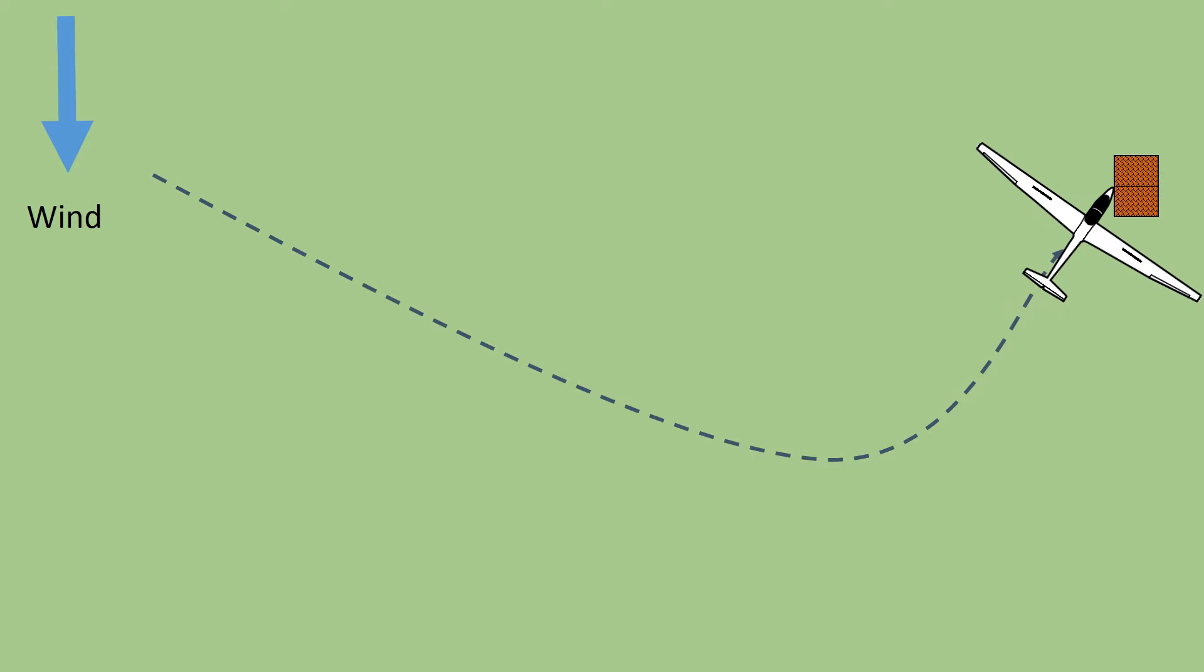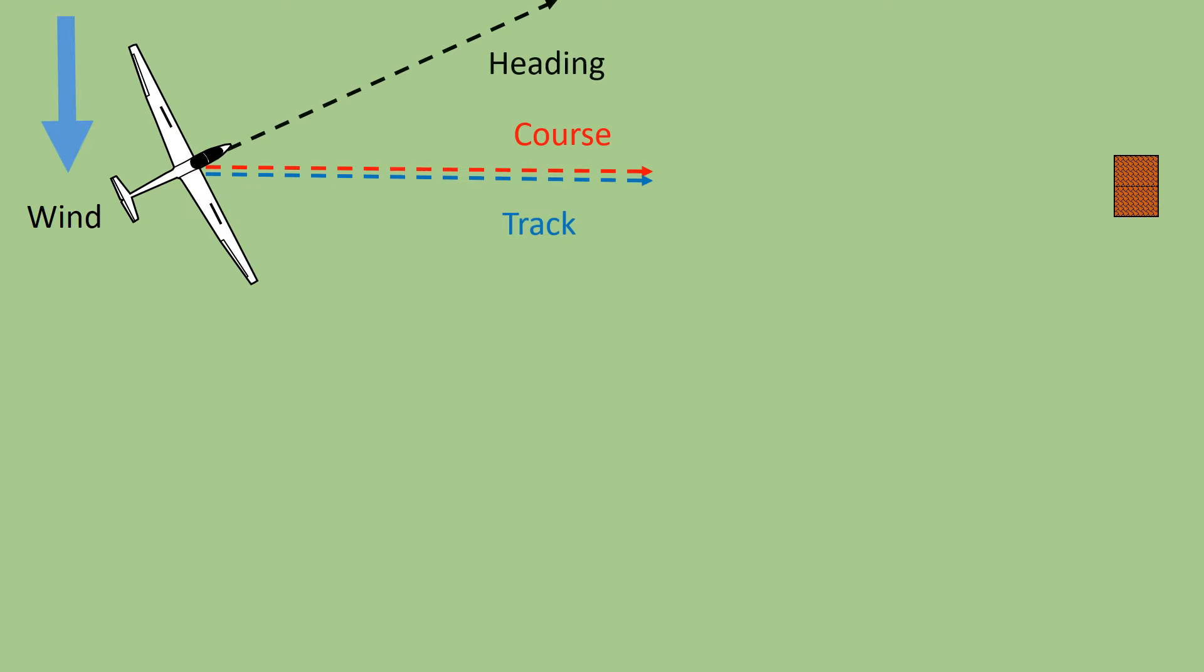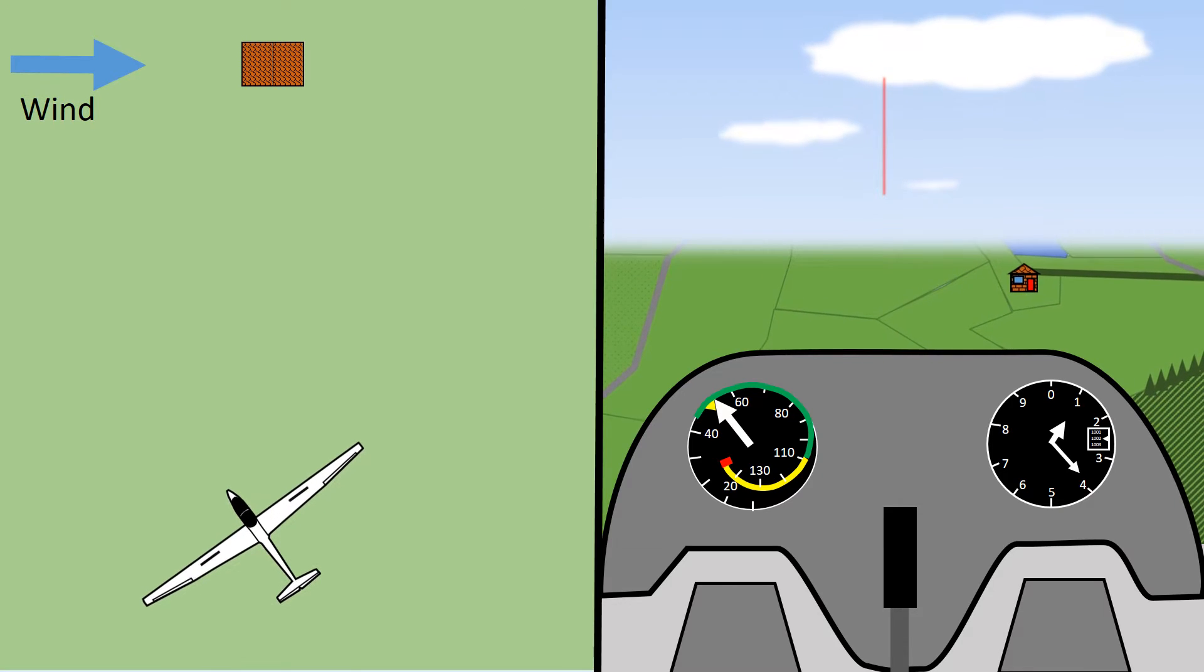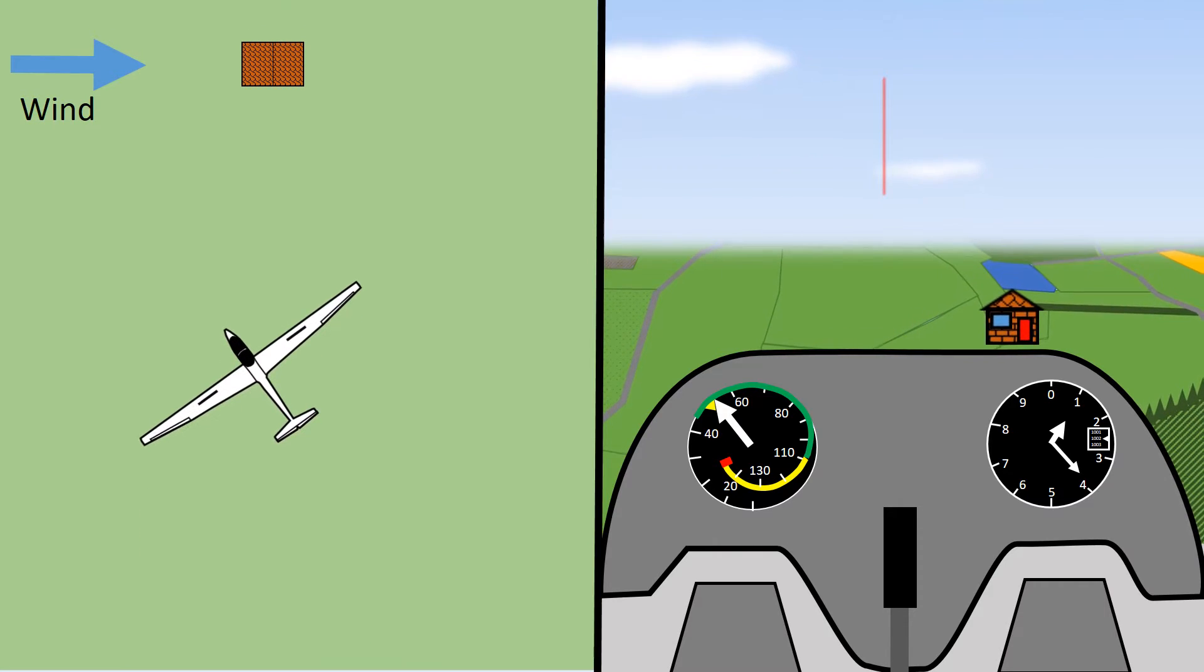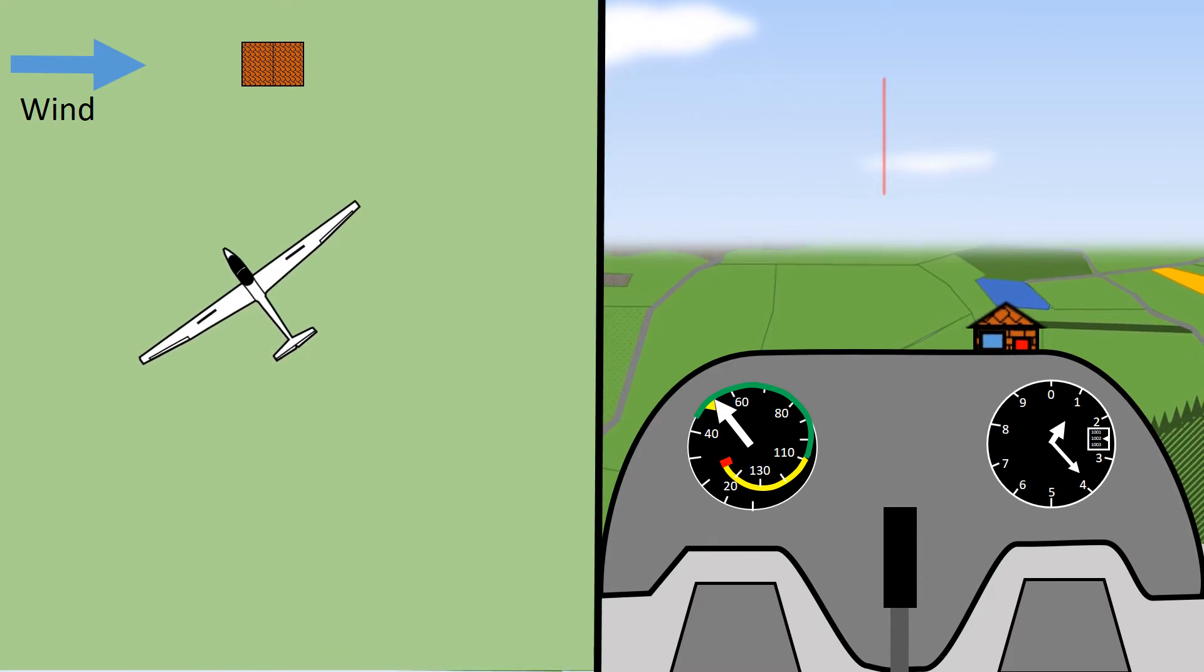While we will get there, we will have travelled further than necessary, taken more time, and will have lost more height. The solution is to turn the heading slightly into wind so that our course and our track match. Notice how the house is no longer directly in front of the nose of the glider, but still appears to come straight towards the glider.